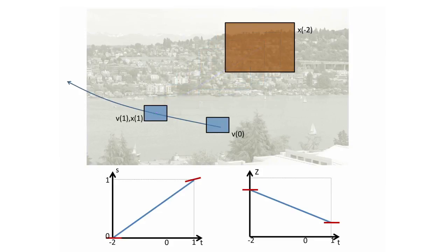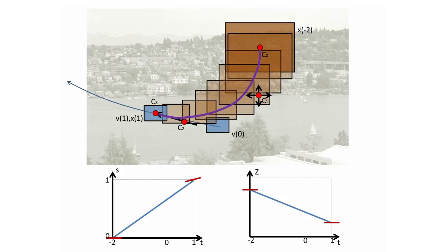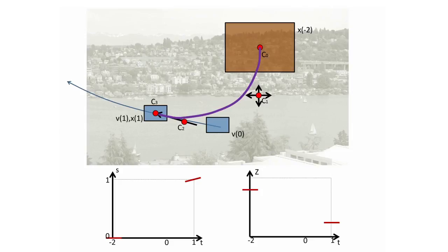Instead, we create a cubic Bezier curved path defined by a first control point in the current view, a final control point at the destination, a second control point that is free to move, and a third control point that can move along the tangent of the video's path. This creates a curved path, still using the linear speed and zoom graphs. If we now use a cubic curve to match the fact that the view starts out still and ends moving with the video, we obtain this path length function.